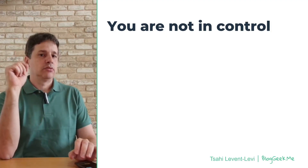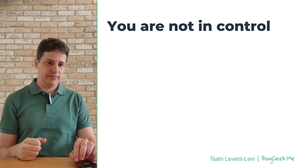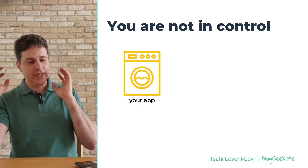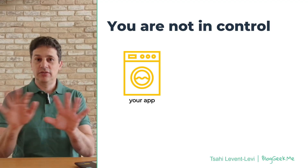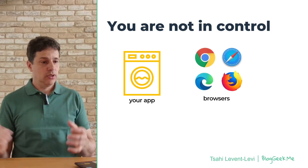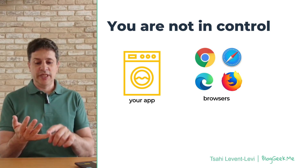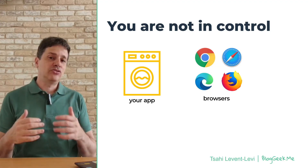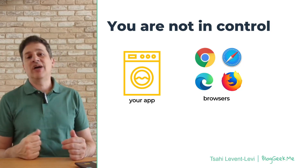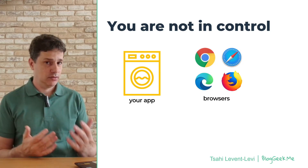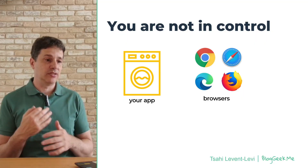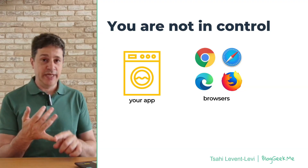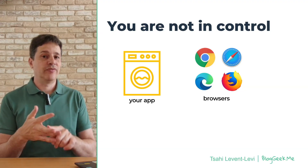The last thing: you are not in control when it comes to WebRTC. There are four different actors. First, your application — you build it, you control it totally. Then there are the browsers — you don't control them. They come from Google, Apple, Microsoft, Mozilla, and others. Google can update Chrome without asking you, and it happens on a monthly basis. The behavior of WebRTC implementations changes, and you need to keep track of that. This affects how you do QA, how you deliver bug fixes, and how you upgrade your system.